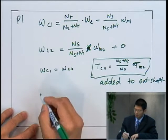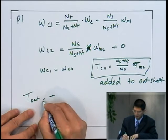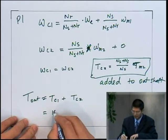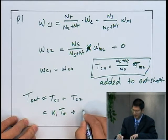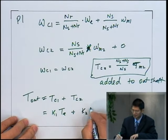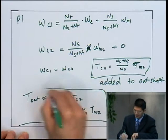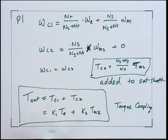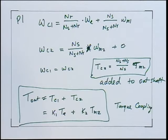Looking at Tc2, it equals (Ns + Nr)/Ns times Tm2. So motor torque Tm2 is added to the output shaft. The output is Tc1 plus Tc2, where Tc1 is proportional to engine torque. This is a torque coupling because you're adding the torques of the two inputs — the engine and the electrical motor two. This is the low range, suited for low vehicle speed operation.